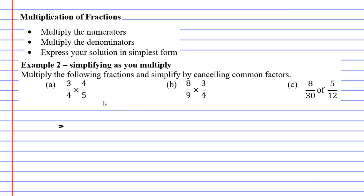So if I was doing question A and multiplying the numerators, I would get 3 times 4. And if I multiplied the denominators, I would get 4 times 5. Now if you look at the top and bottom of the fraction, you'll notice some common factors. We have a common factor of 4. Because of that, we can cancel them.